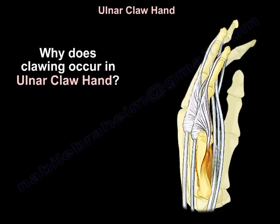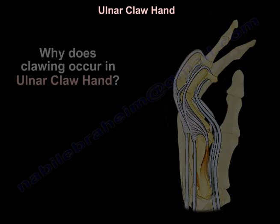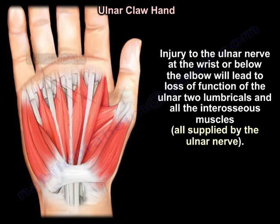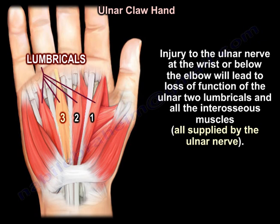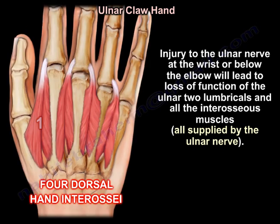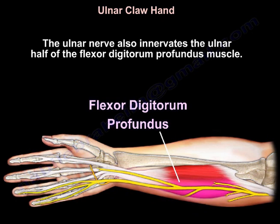Why does clawing occur in ulnar claw hand? Injury to the ulnar nerve at the wrist or below the elbow will lead to loss of function of the ulnar two lumbricals and all the interosseous muscles, all of which are supplied by the ulnar nerve.